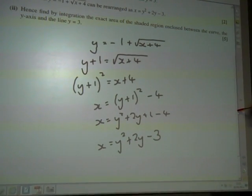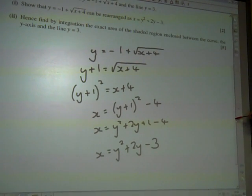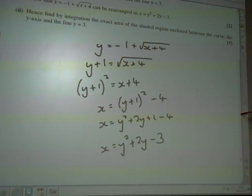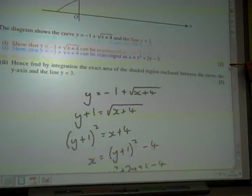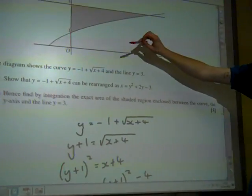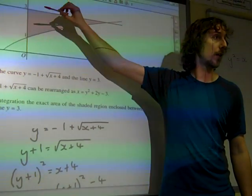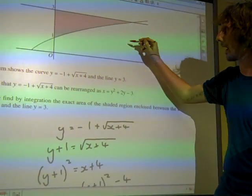Hence, find by integration the exact area of the shaded region enclosed between the curve, the y-axis, and the line y equals 3. Well, this is that second bit, isn't it? This is just saying the area between 1 and 3 under the curve is just the integral.